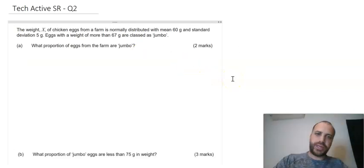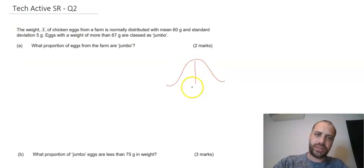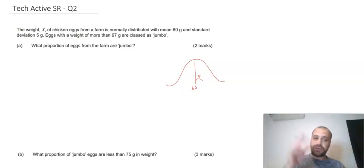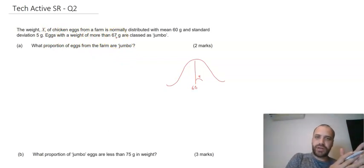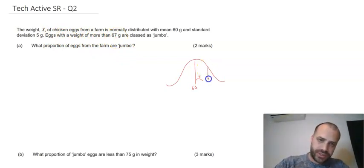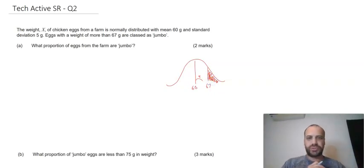So you know how I roll with this kind of question. I'm going to draw a picture. It's normally distributed. Mean of 60. Standard deviation of 5. I like to draw it in, but hey, I'll probably get rid of it later. What proportion of eggs from the farm are jumbo? Eggs with a weight of more than 67 grams are jumbo. So this value here, 67. So we want to know this area right here for our normal distribution. Now that we've drawn this picture, the QAA really likes that picture. It gives you a mark for that picture quite often.